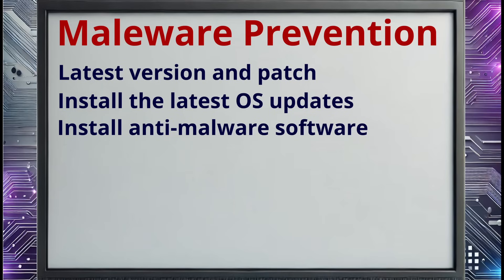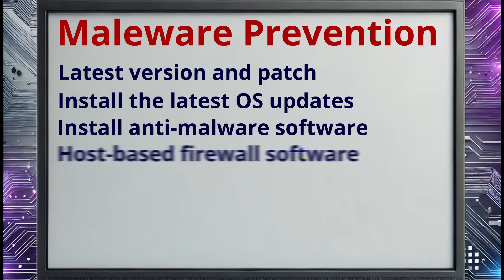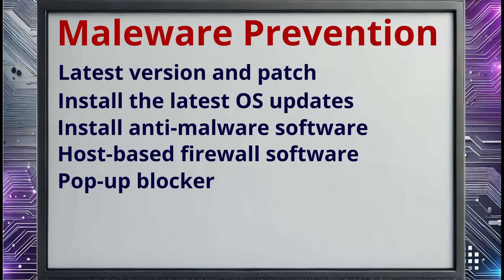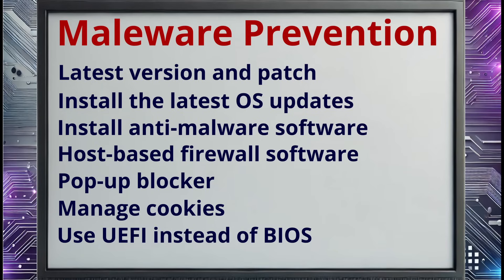You should also enable real-time protection to block infections before they actually occur. If an anti-malware scan detects malicious software in your system, you should always either quarantine it or delete it. You should also protect each computer on your network with host-based firewall software — this prevents malicious hosts on the internet from establishing unauthorized connections with your computer. Use a pop-up blocker to prevent adware; most web browsers provide pop-up blocking functionality that you just have to enable. You should also carefully manage the cookies on your system, as some cookies are useful but others can be risky. Most web browsers allow you to specify which types of cookies you want to allow and block. Finally, consider switching to a newer computer system that uses UEFI firmware instead of the traditional BIOS in order to prevent rootkit infection.